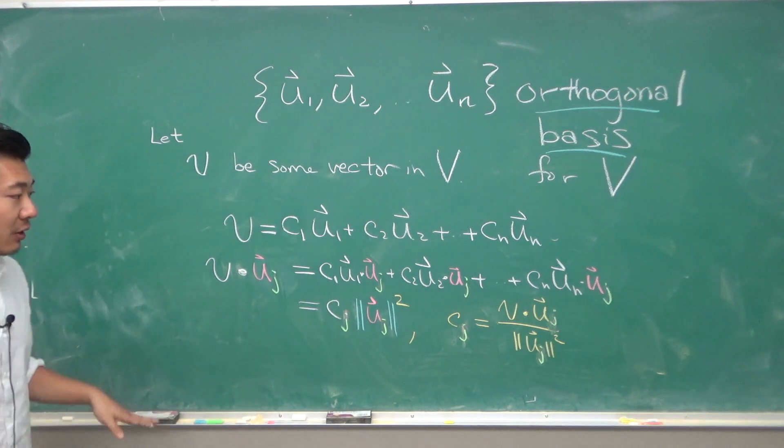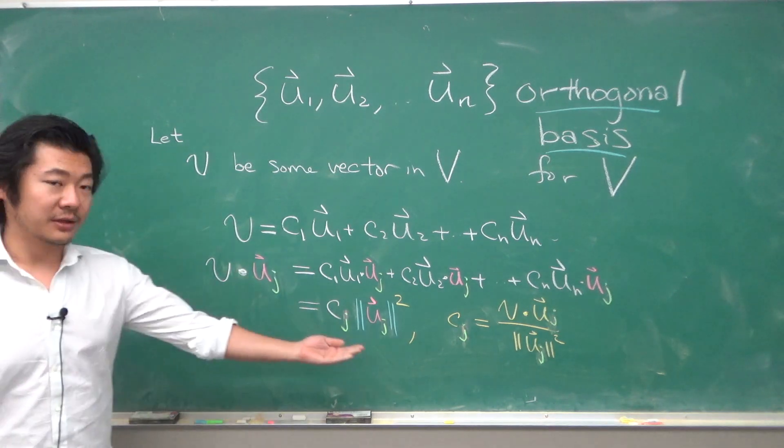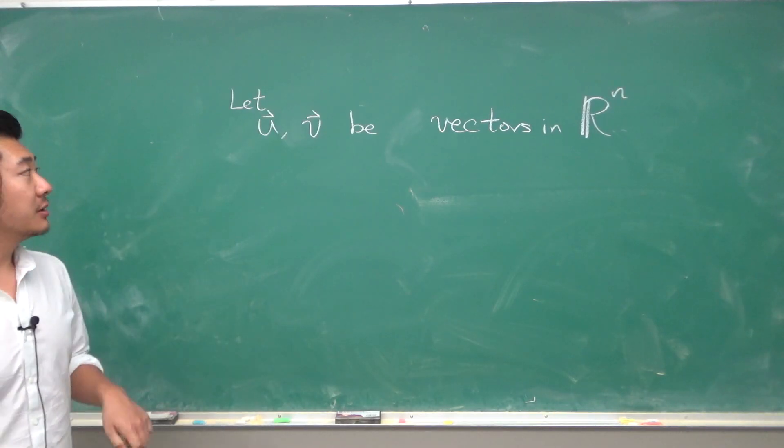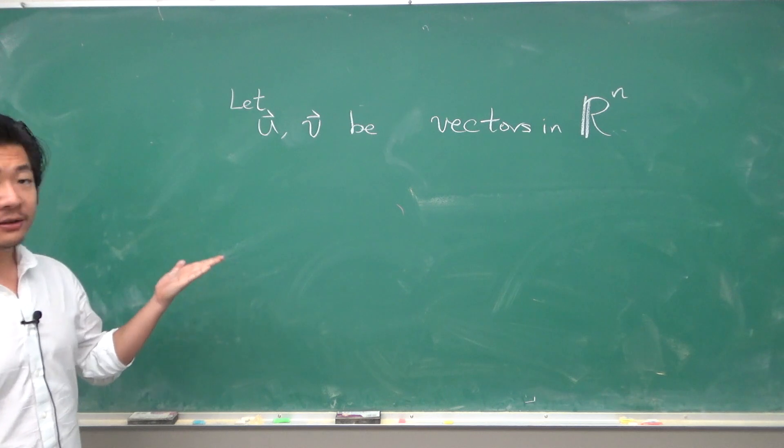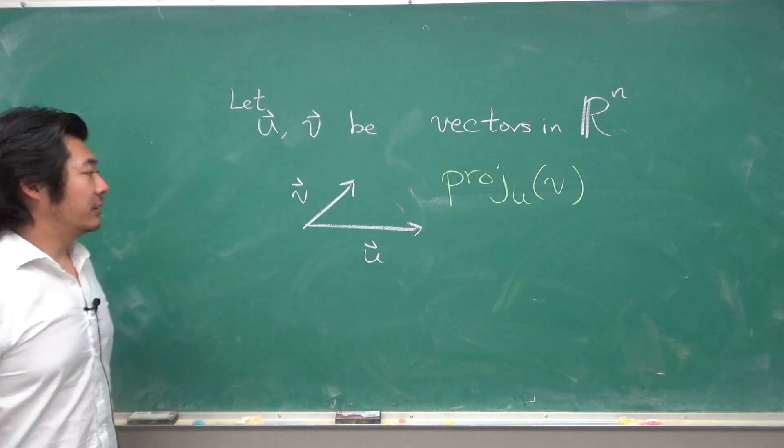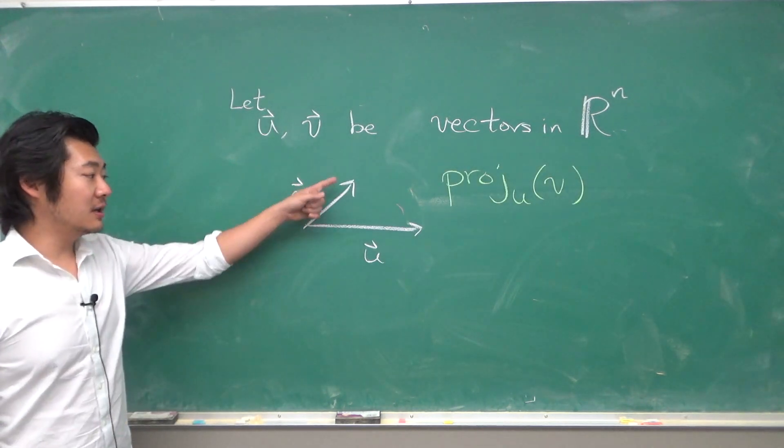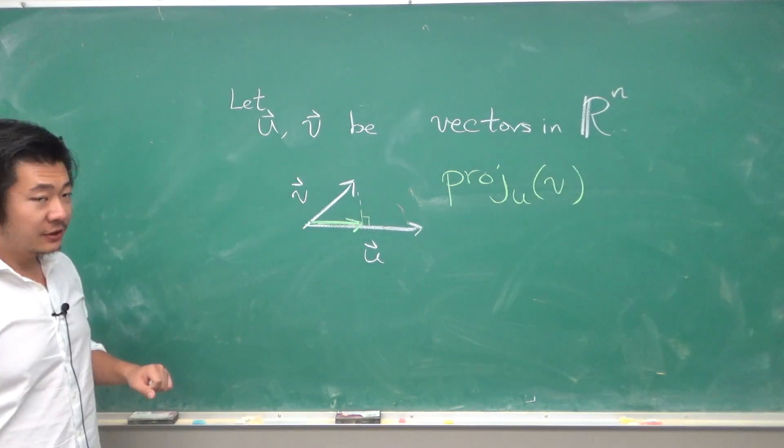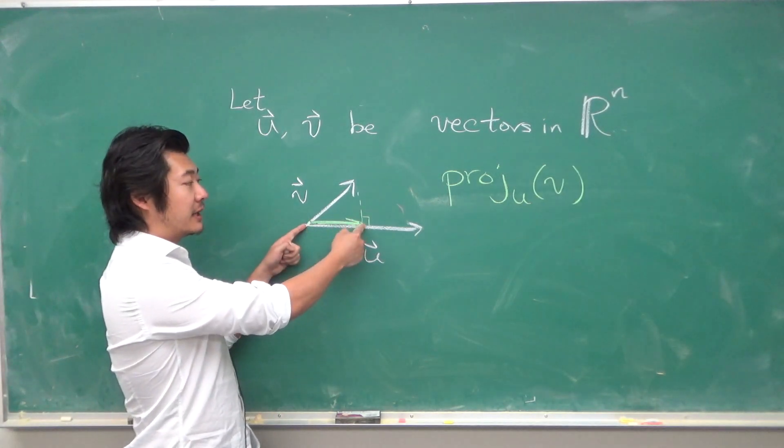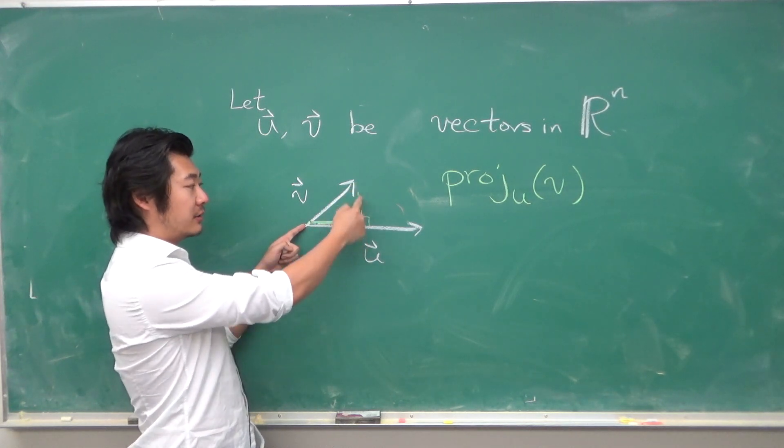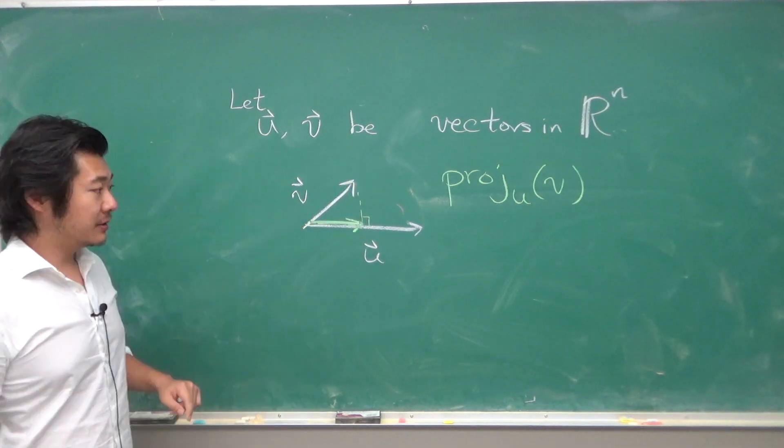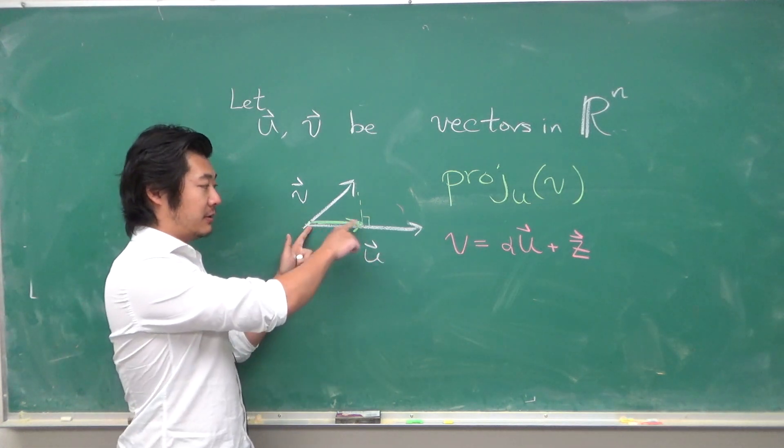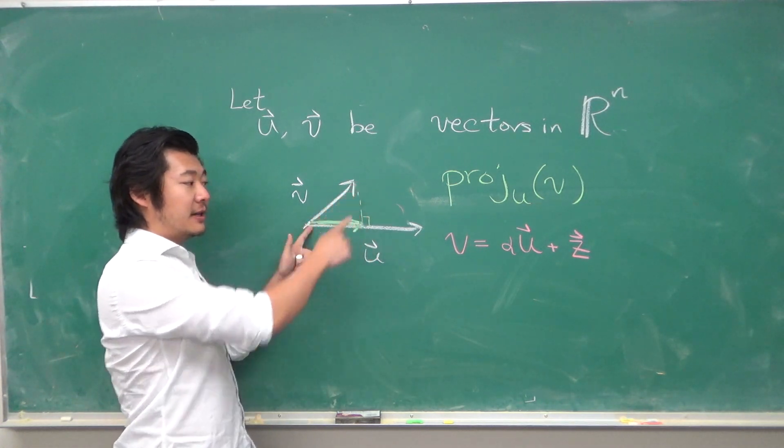Now let's talk about orthogonal projections. Let u and v be vectors in ℝⁿ. The orthogonal projection of v onto u is this vector going in the u direction such that this vector plus some vector orthogonal to u can equal v. We're looking for some alpha so that it goes this much and then a z that's orthogonal to u, so z·u will be zero.